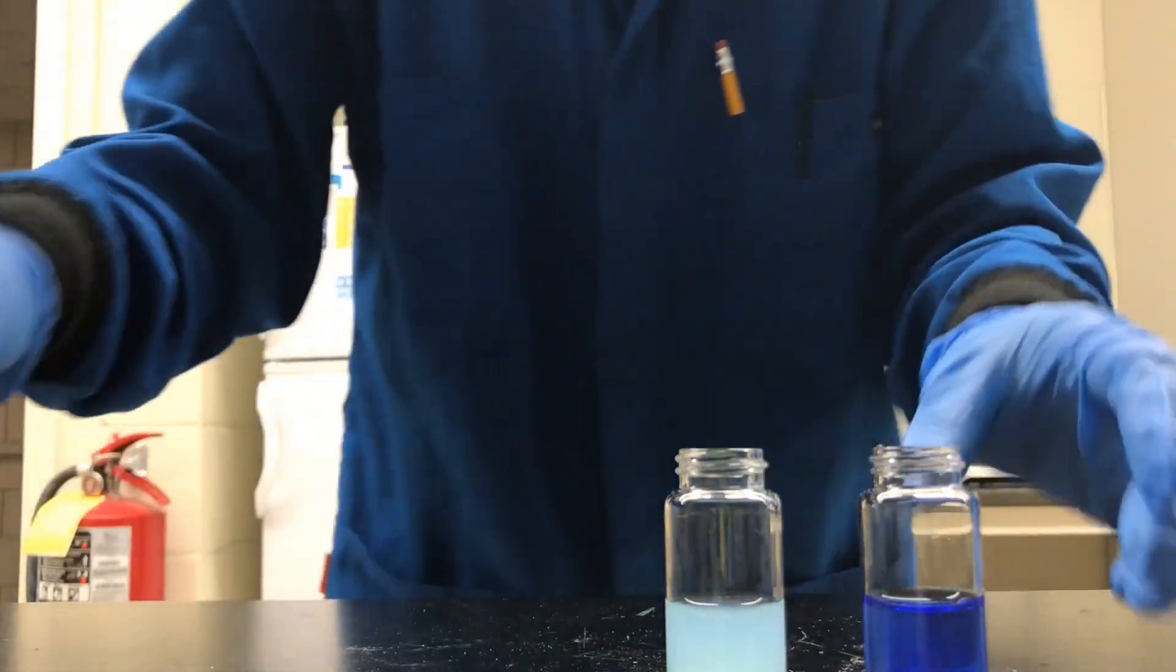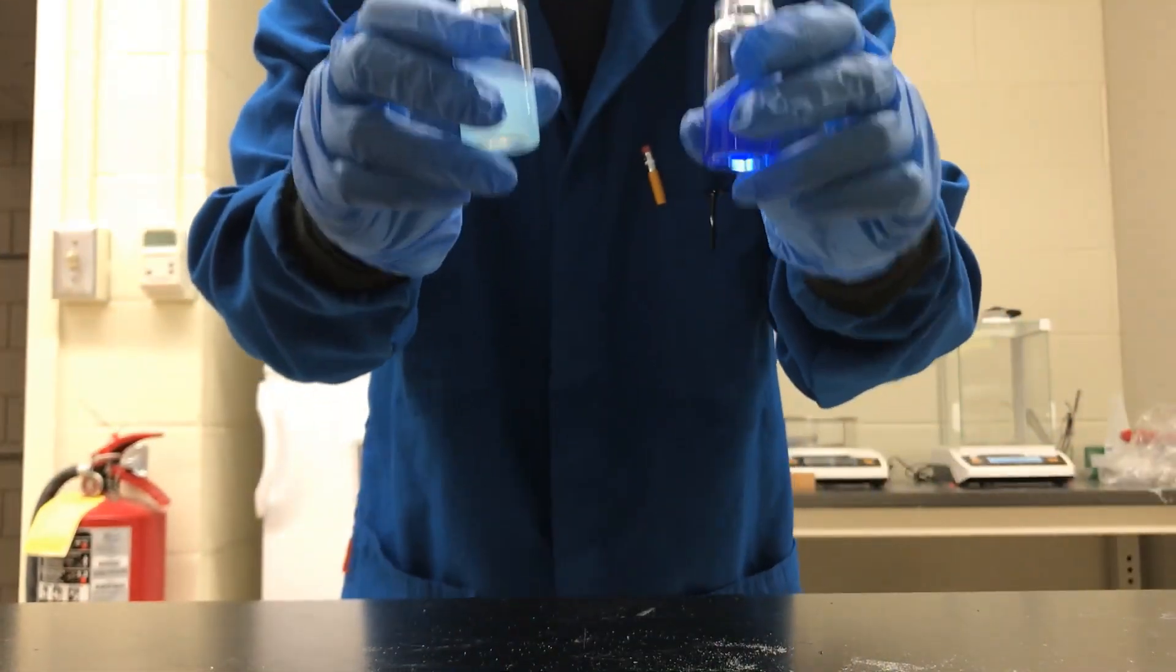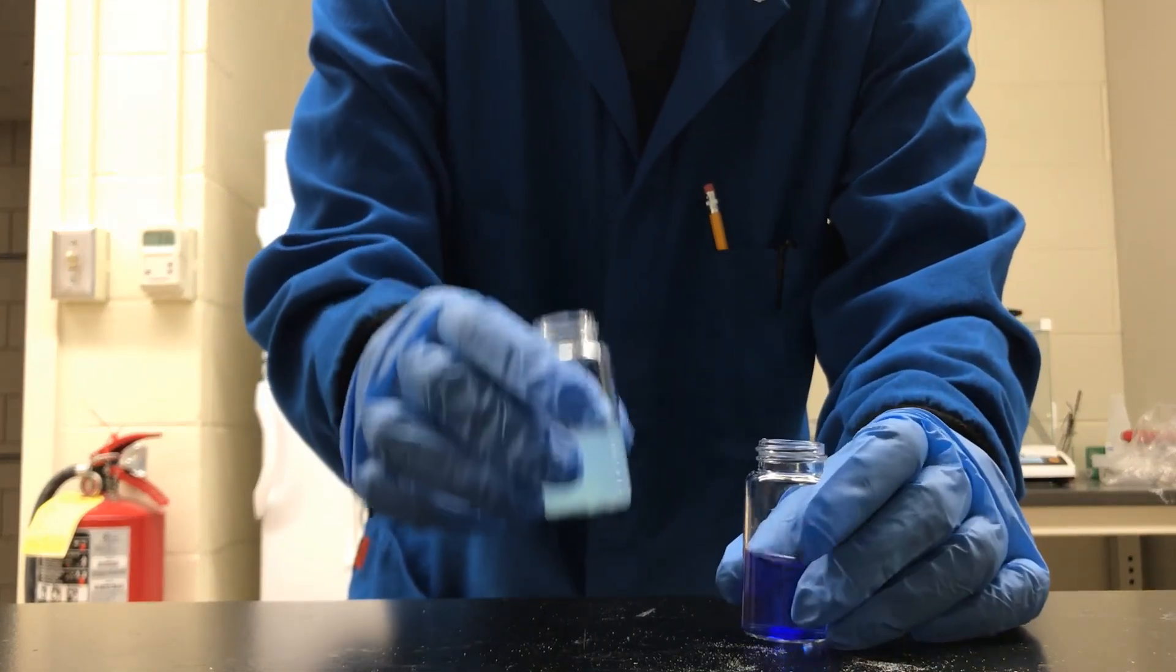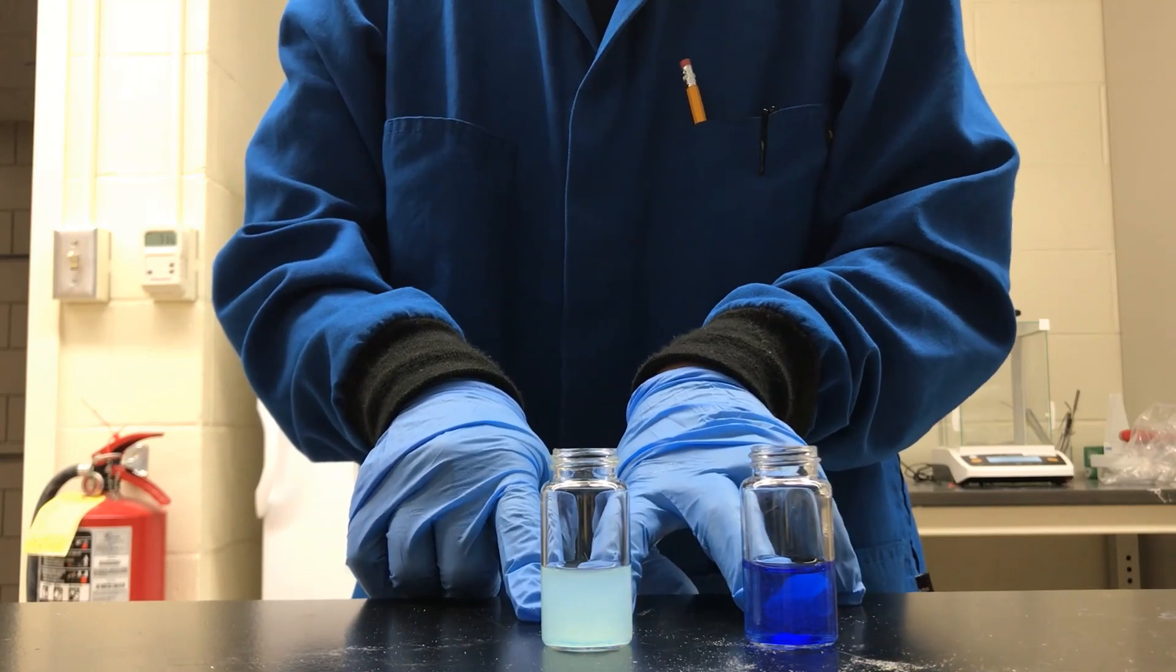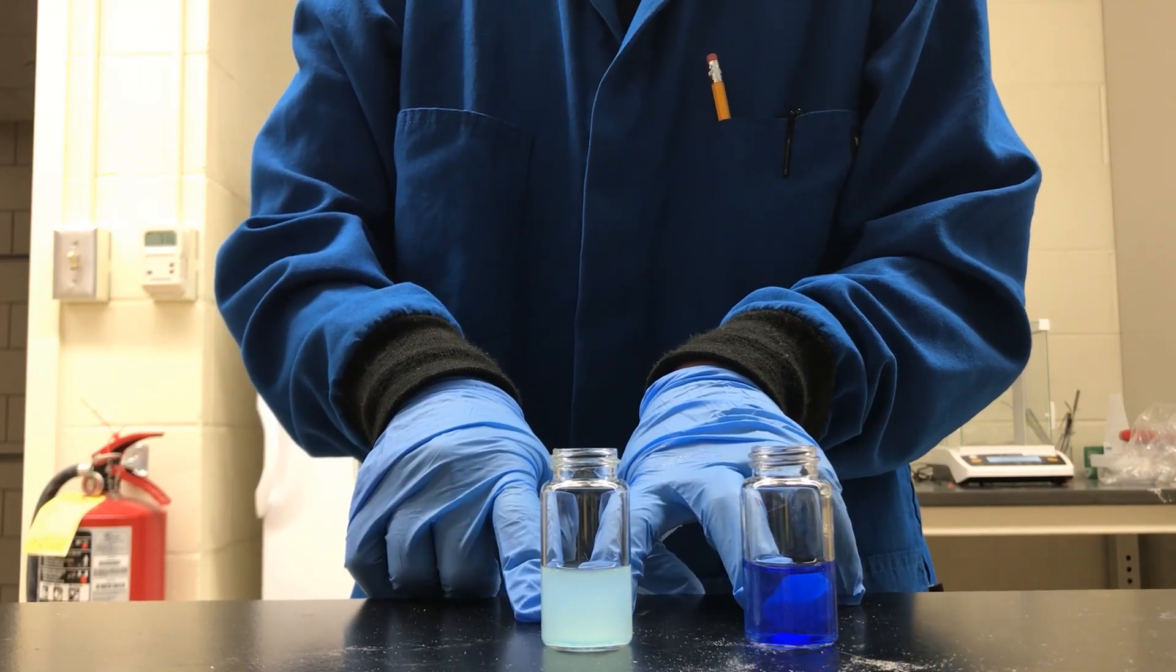So these are our two copper sulfate solutions, or copper solutions. One is the copper amine compound, one is the hexa-aqua compound. What we can do is now measure the differences between the redox potentials by hooking this up to a voltmeter.